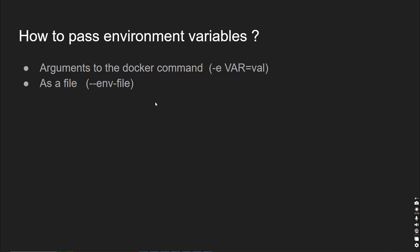There are two ways to pass variables. First, you can pass individual variables using the `-e` argument, one by one. Second, if you have many variables, you can pass them as a file at runtime using `--env-file` and provide the file path. All variables are stored as key-value pairs inside the file.